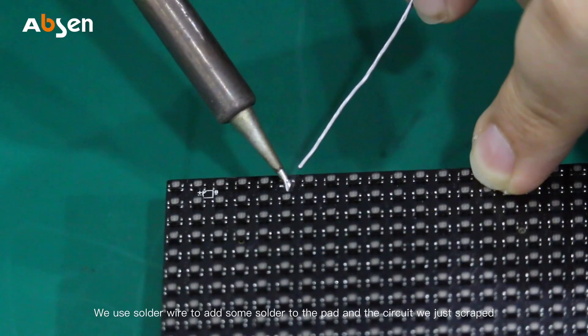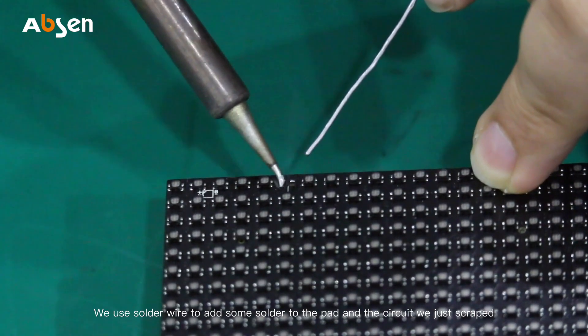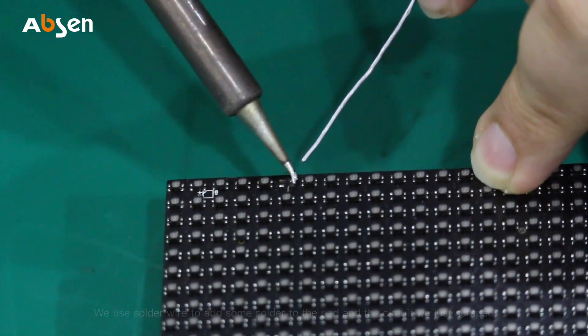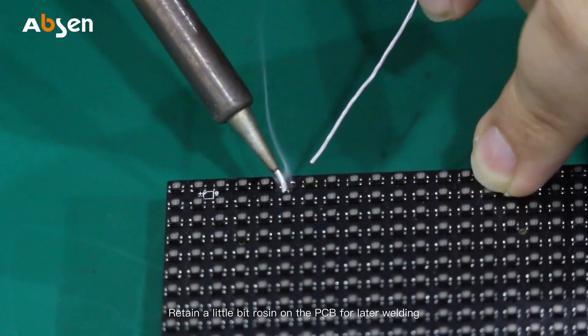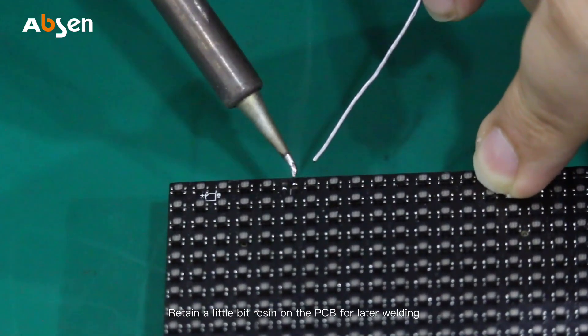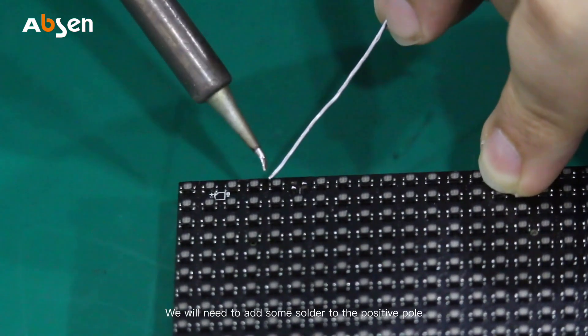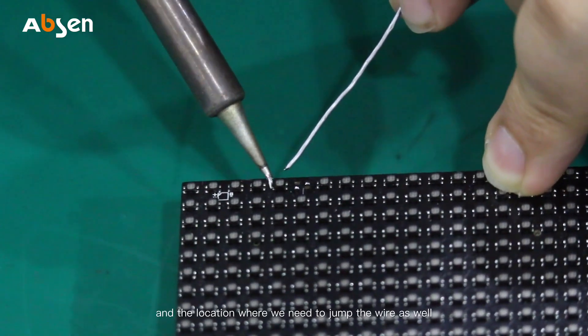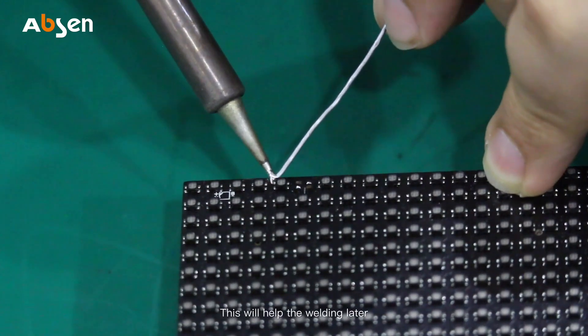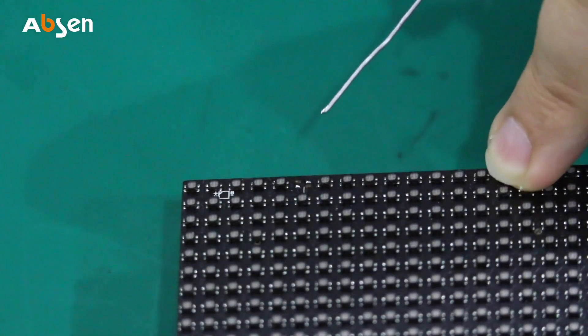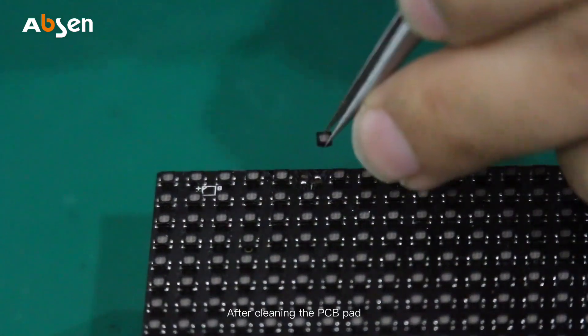We use solder wire to add some solder to the pad and the circuit we just scraped. Retain a little bit rosin on the PCB for later welding. We will need to add some solder to the positive pole and the location where we need to jump the wire as well. This will help the welding later.